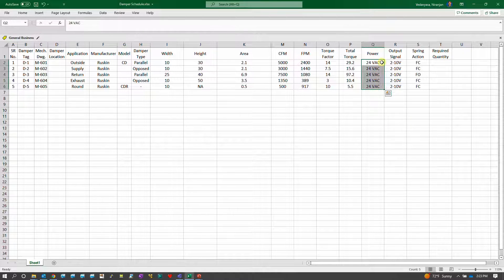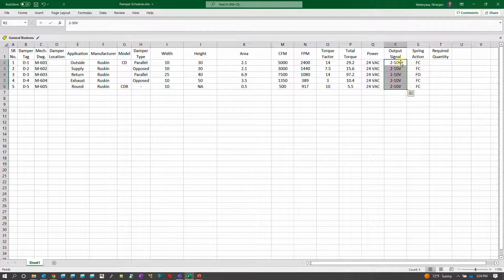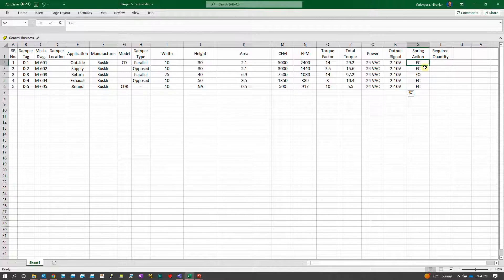The other requirements which you'll see is what power supply do you want, what is the power requirement. Do you want a 24 volts actuator or a 120 volts actuator? You can select based on that. And the output signal which is usually 0 to 10 or 2 to 10 or 4 to 20 milliamps, whatever you have in your control section.